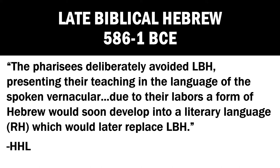The Pharisees deliberately avoided LBH, presenting their teaching in the language of the spoken vernacular. Due to their labors, a form of Hebrew would soon develop into a literary language — RH — which would later replace LBH. The Qumran people were speaking a closer form of Biblical Hebrew, while opposed and isolated from that, something split off and developed into a more Aramaic setting to later evolve into Rabbinical Hebrew.